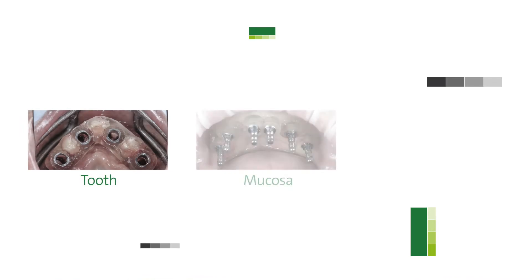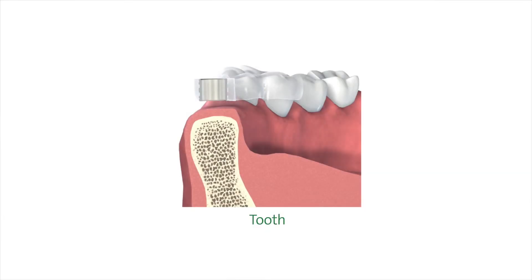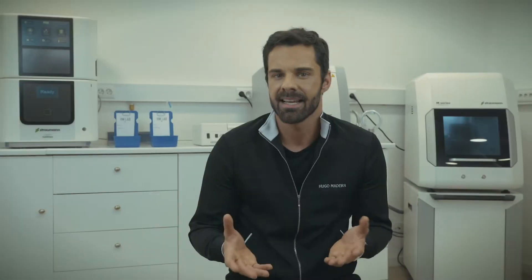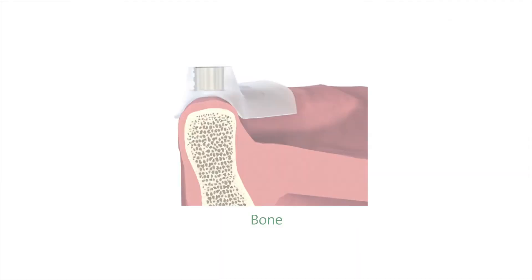There are different types of surgical guide designs related to the type of support: teeth-supported, mucosa-supported, or bone-supported guides. In teeth-supported guides, it is important to have at least three teeth available for stability. A mucosa-supported guide is used in edentulous cases and requires the scan of the prosthesis. Bone-supported guides are used in partially or fully edentulous arches, and you should have at least three millimeters of supporting bone.